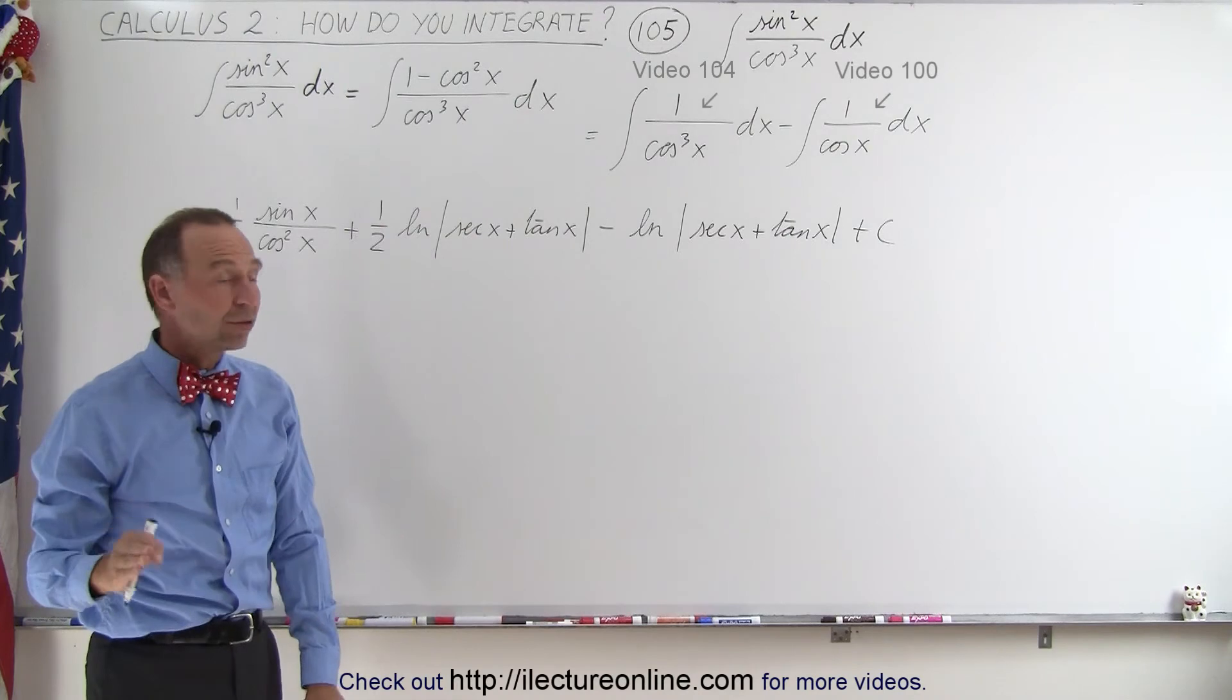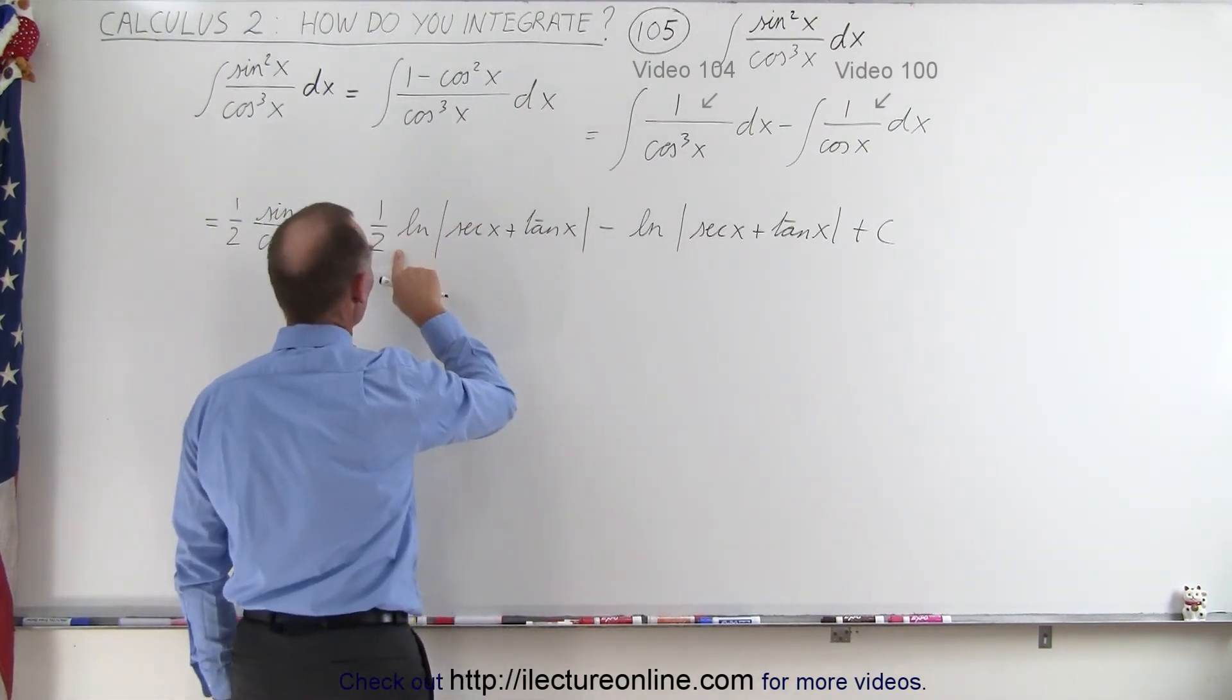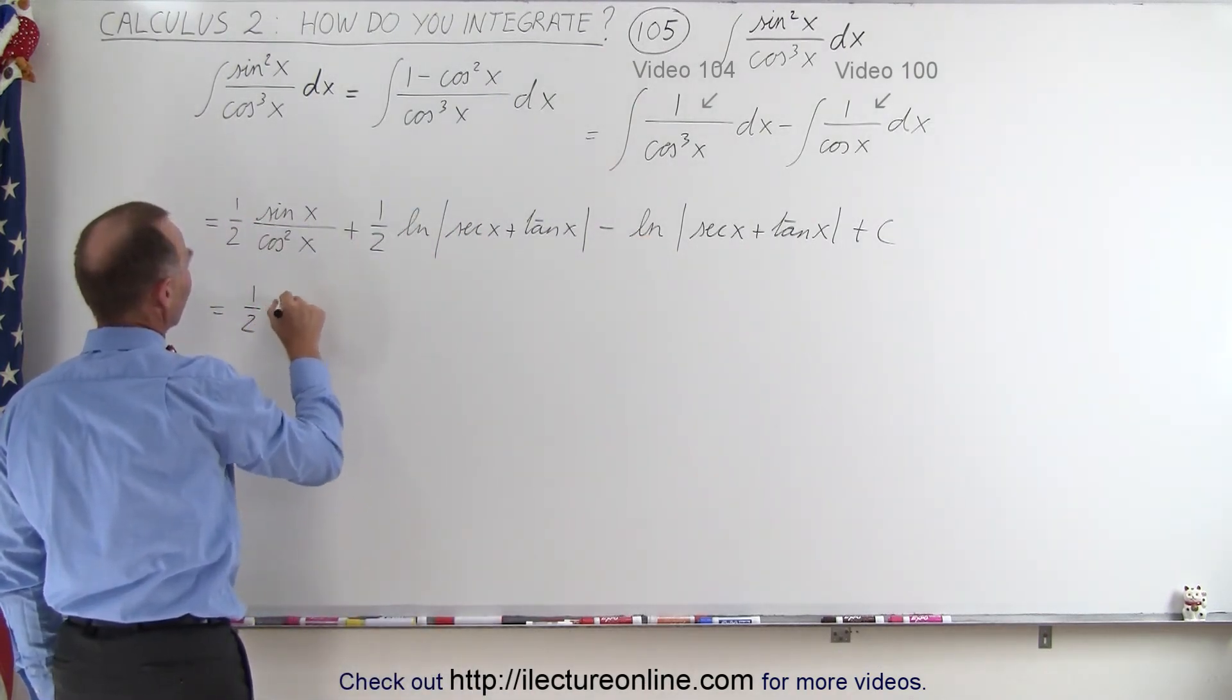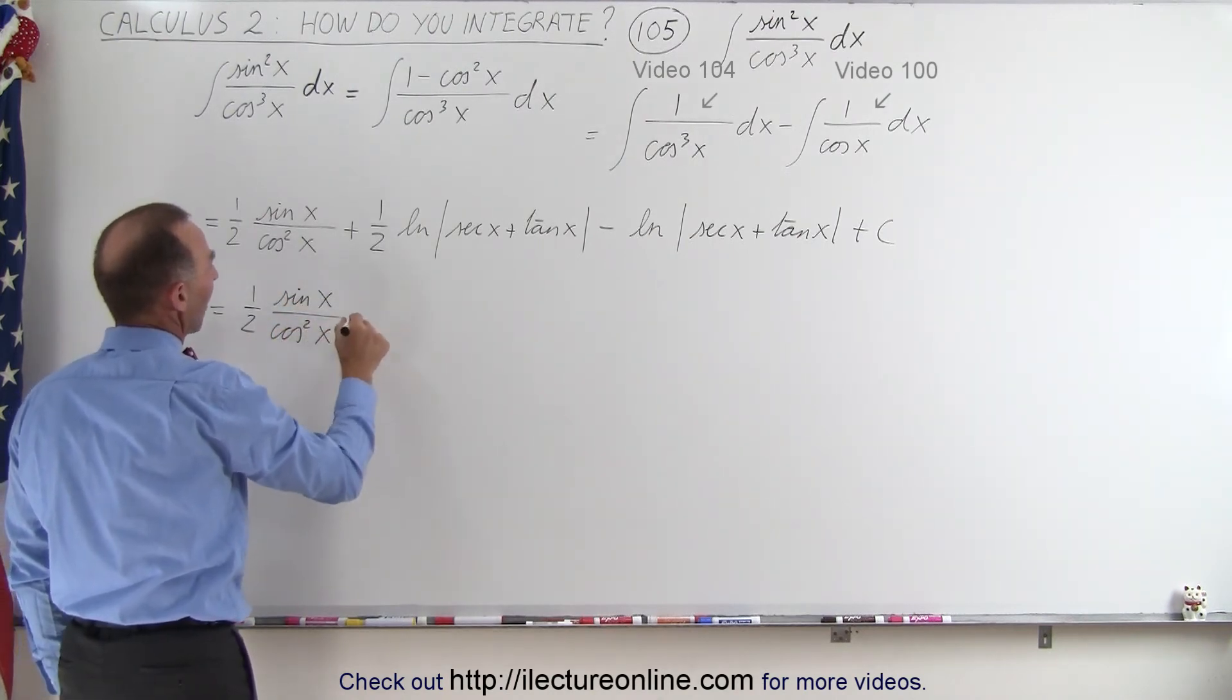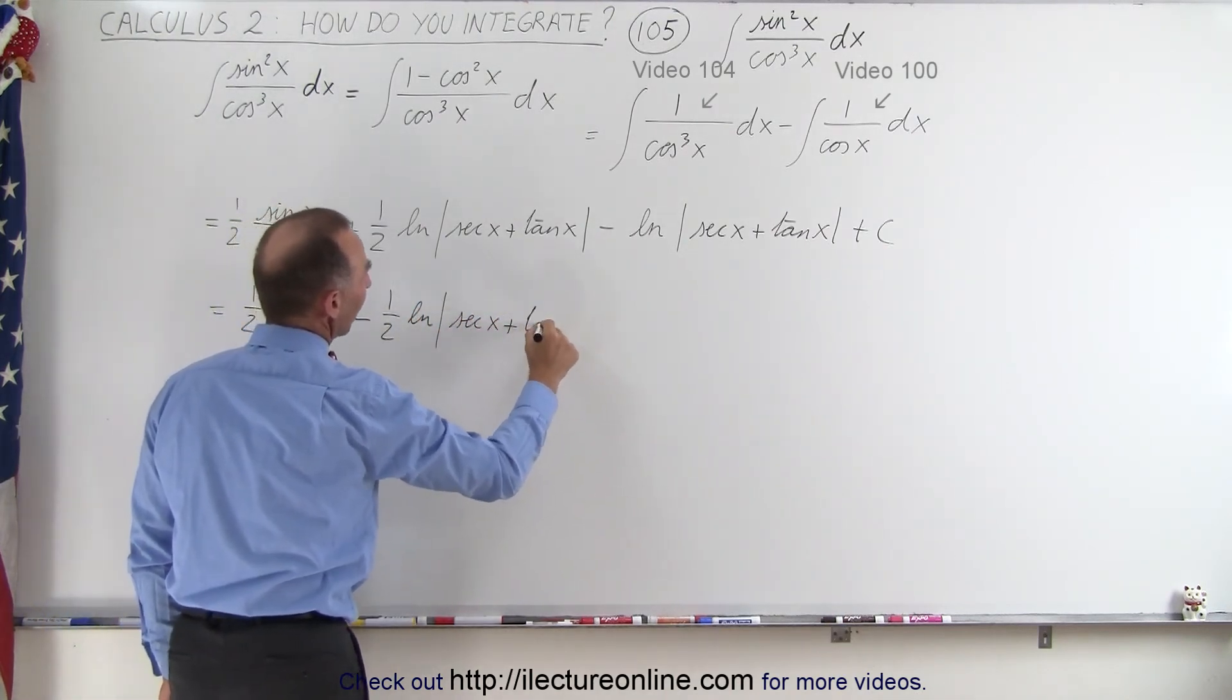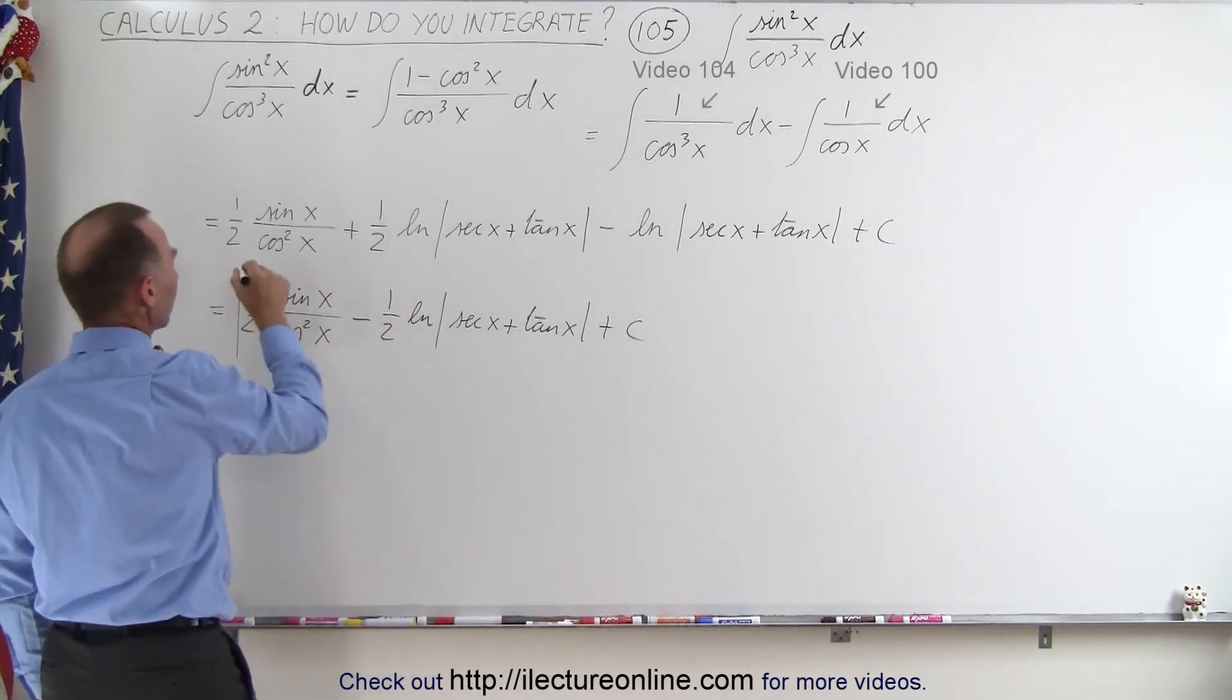And then all we have to do is add these two terms together. We have a plus 1 half and a minus 1. So this then becomes equal to 1 half times the sine of x divided by the cosine square of x, minus 1 half times the natural log of the secant of x plus the tangent of x plus the constant of integration.